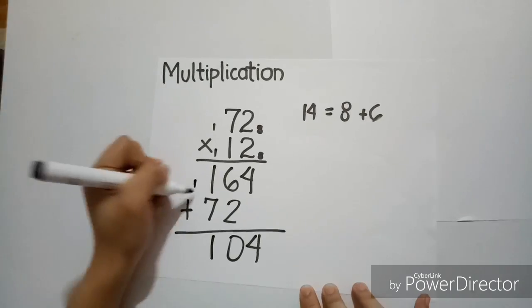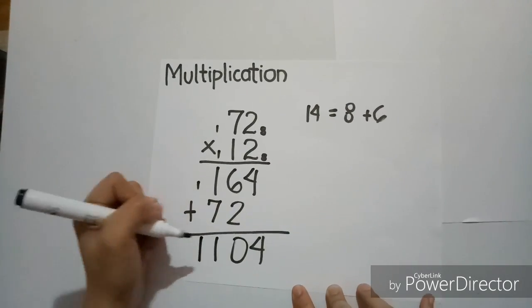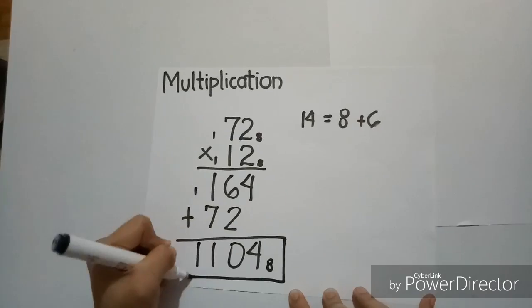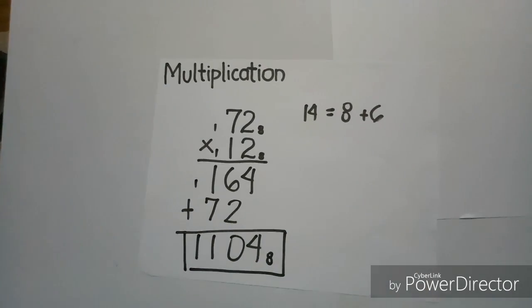So, let's take 1, then carry 1. Then, bring down 1. And the final answer is 1104 base 8.